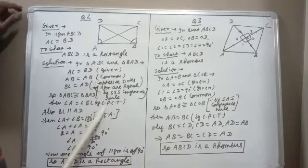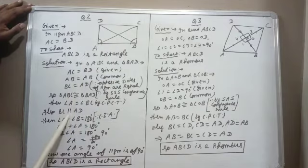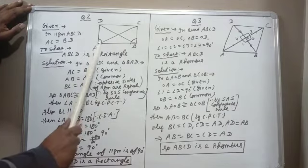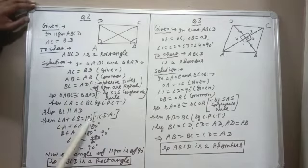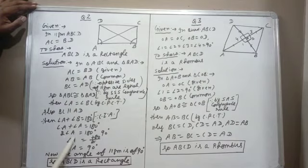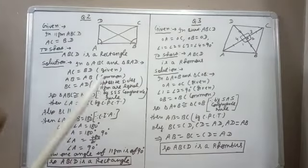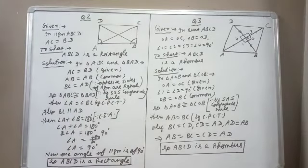From congruence, angle A = angle B. Since ABCD is a parallelogram, BC and AD are parallel, so angle A + angle B = 180° (co-interior angles). Substituting angle A for angle B: 2 × angle A = 180°, so angle A = 90°. We have proved one angle of the parallelogram is 90°, therefore ABCD is a rectangle.